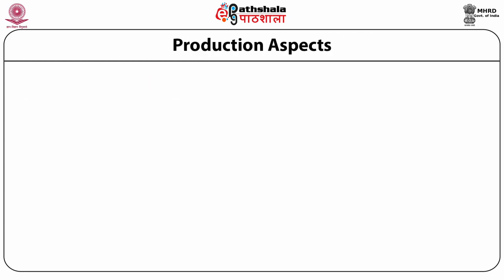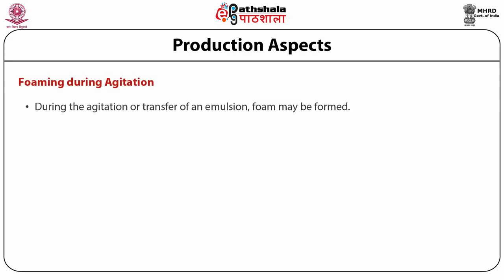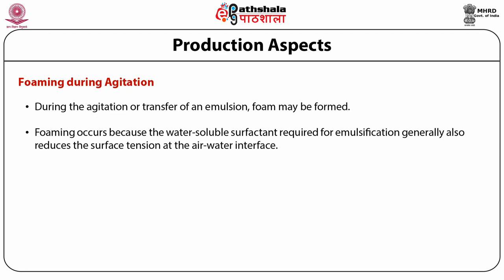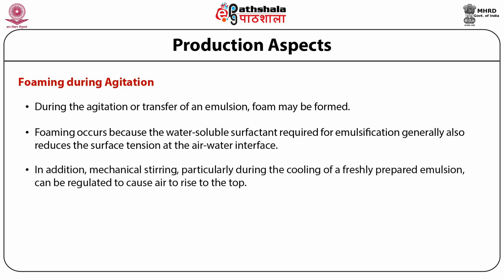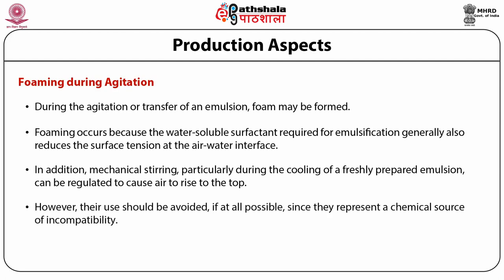Regarding production aspects of emulsions, foaming is a key parameter. During agitation or transfer of an emulsion, foam may be generated because the water-soluble surfactant required for emulsification generally also reduces the surface tension at the air-water interface. To minimize foaming, emulsification may be carried out in closed apparatus under vacuum. Mechanical stirring during cooling of a freshly prepared emulsion can be regulated to cause air to rise to the top. If foaming cannot be eliminated, foam depressants or anti-foams may be added, though their use should be avoided as they represent a chemical source of incompatibility.